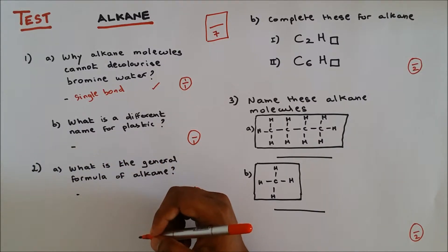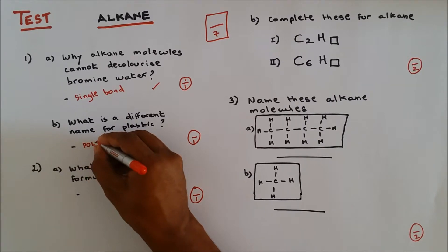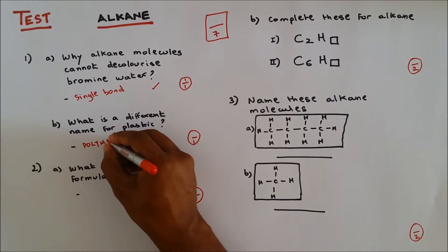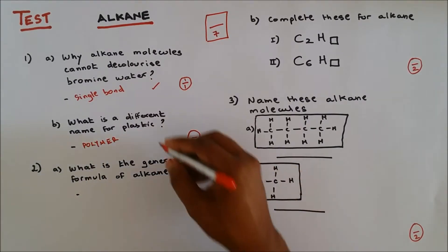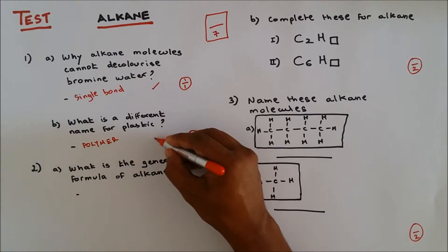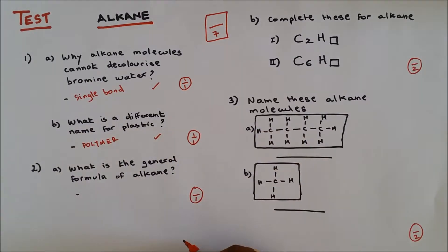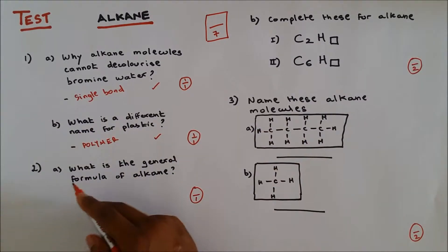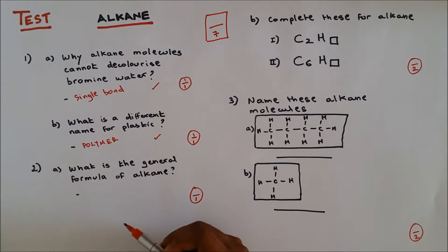...is polymer. That's one out of one. Question 2a: what is the general formula of alkane?